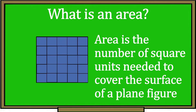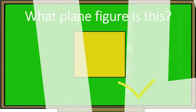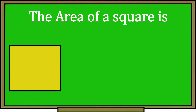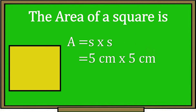What plane figure is this? This is a square. Suppose one side of this square is 5 centimeters. Find the area of this square. What is the formula for finding the area of a square? The area of a square is: area equals side times side. The measurement of the side is 5 centimeters times 5 centimeters. The answer is 25 square centimeters.